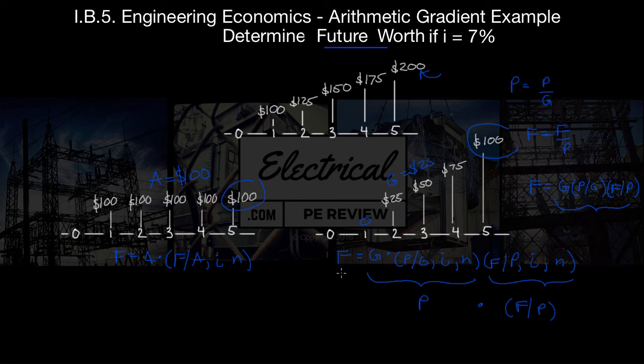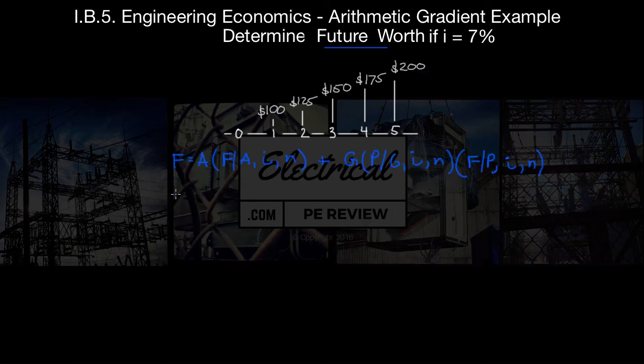Then we're going to take that new found present worth value. We're going to convert it to a future amount at n equals 5 using F given P. Okay, so let's begin.